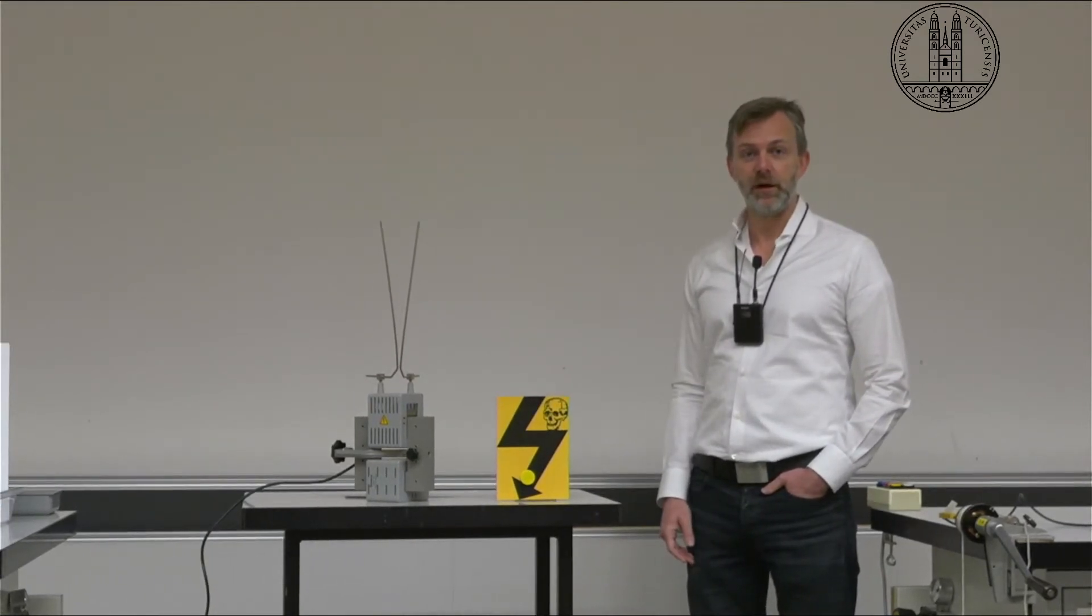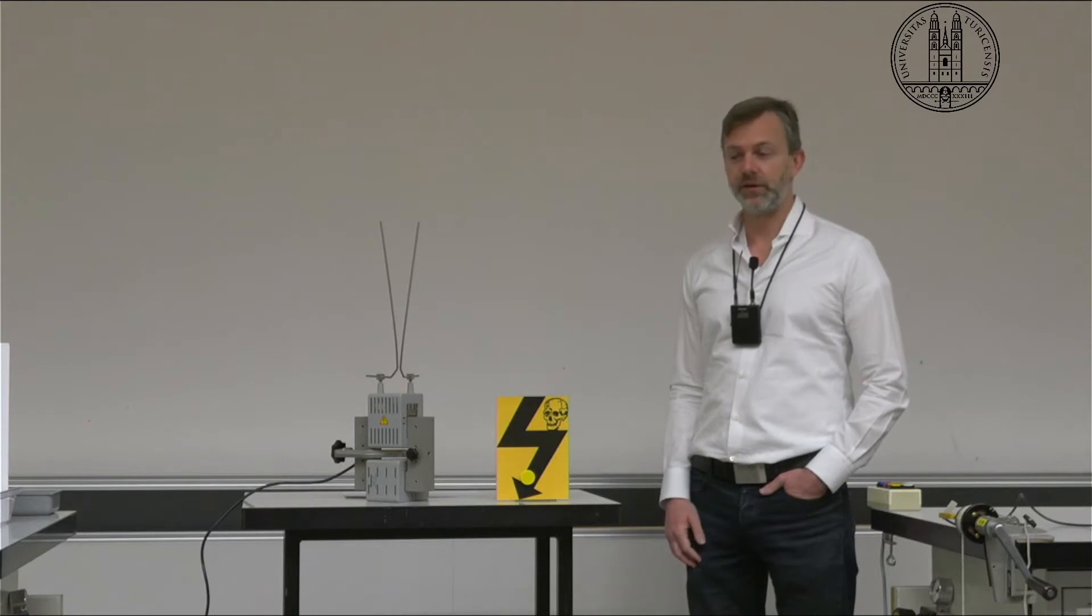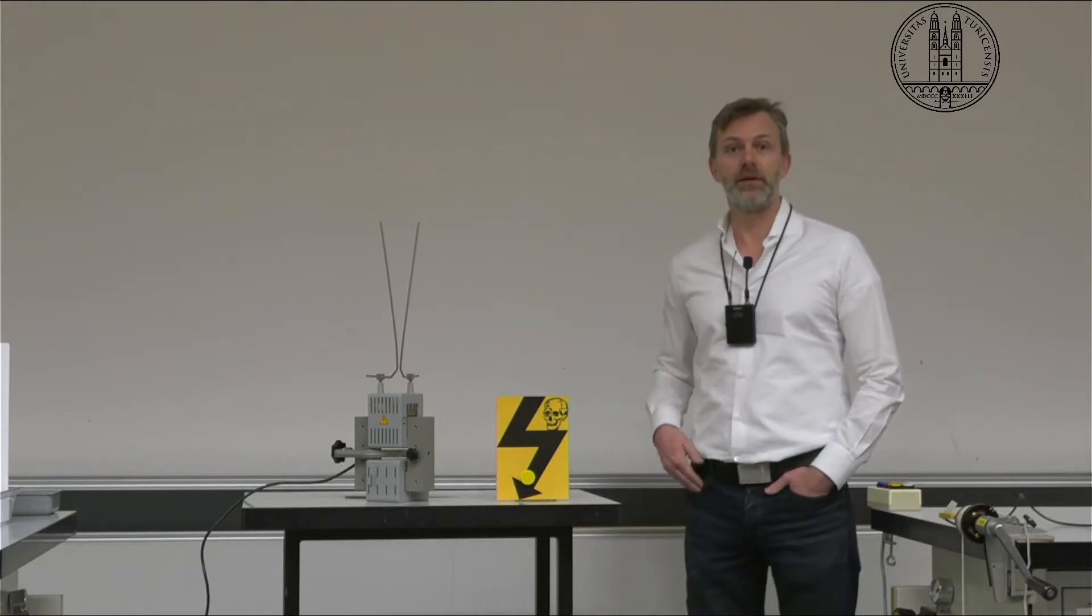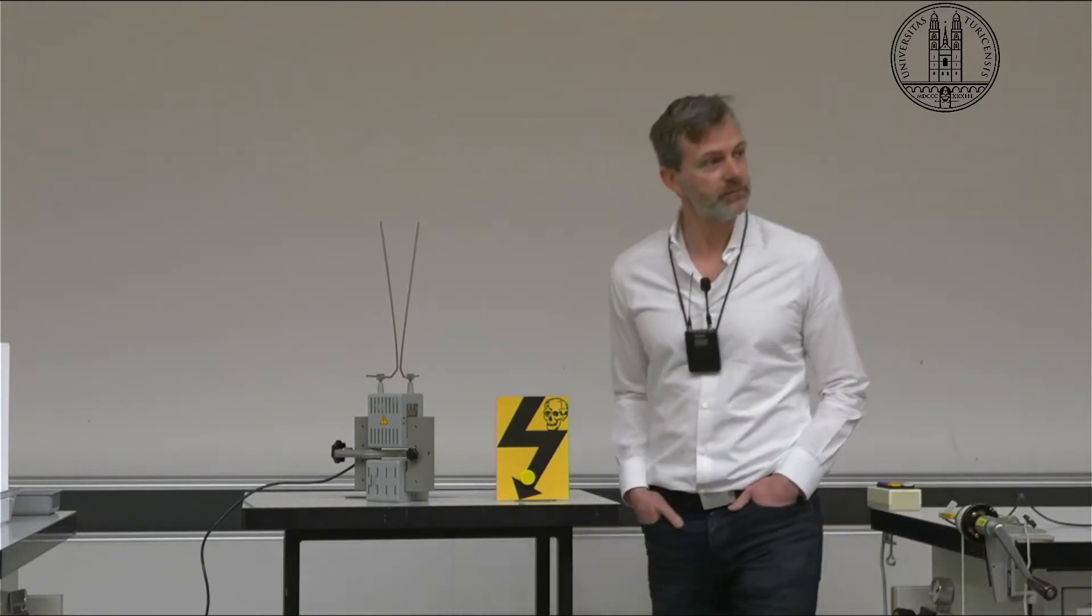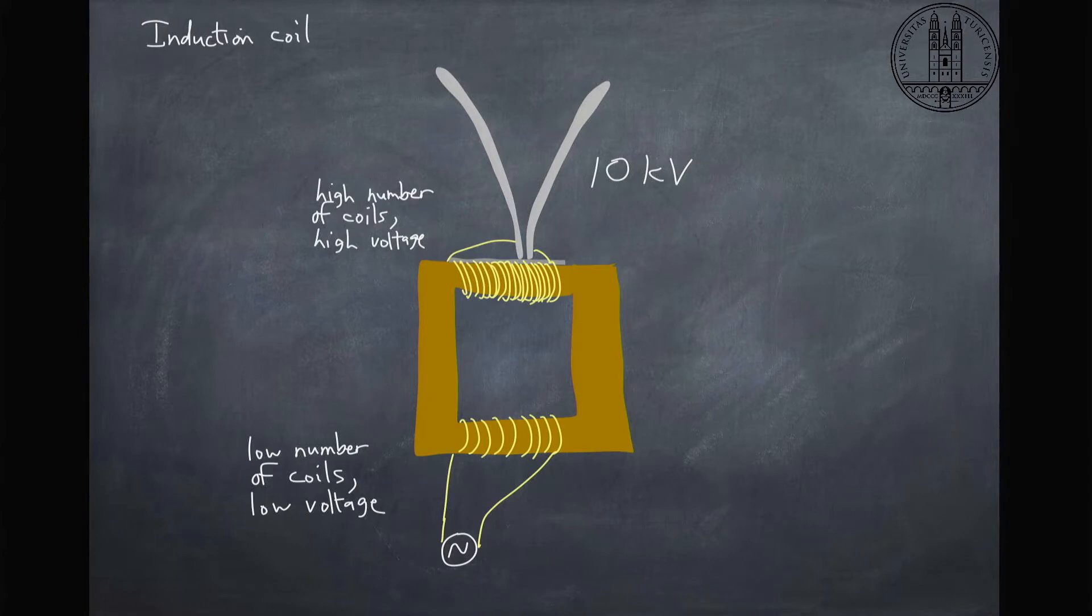First, let's try to understand what's happening with our setup here. This is called an induction coil, and you can see we have this iron core here. We have a voltage that's being transformed from a low voltage with a low number of coils to a high voltage, up to 10 kilovolts of electricity.